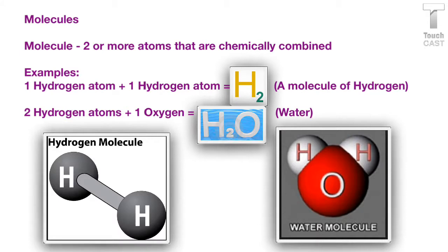When two of those atoms chemically combine, we have a molecule. A molecule can be two or more atoms chemically combined. These atoms can come from the same element, such as one hydrogen atom plus one hydrogen atom giving us H2, which is a molecule of hydrogen. Or, a molecule can be made of atoms from different elements, such as two hydrogen atoms plus one oxygen atom, equaling H2O, which is water. So molecules can be made from the same element or different elements.